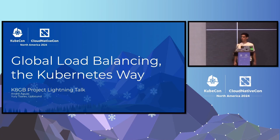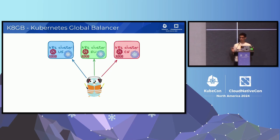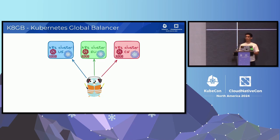So without further ado, what is KHEB? KHEB addresses the challenge of global traffic management. If your application is deployed in multiple clusters in various regions, then KHEB ensures it is highly available. In this example, KHEB will help with routing. We have an application deployed in three clusters and KHEB will help route our users to one of those clusters according to a strategy.